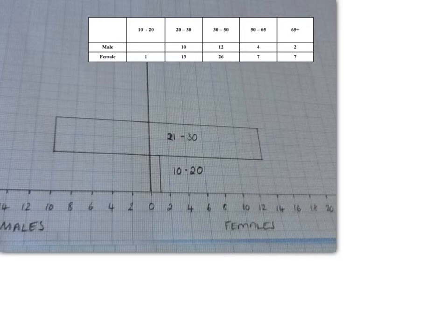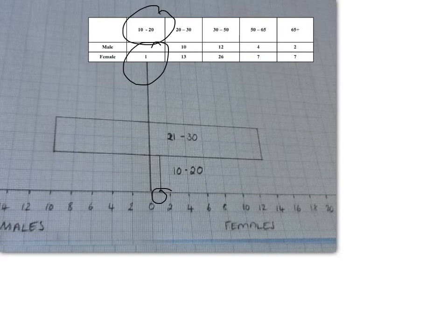You are now ready to begin to draw your bar graphs. They go horizontally, as you will see. For the 10 to 20 age group, there are no males, but we had one female. So we go down to our scale, and as one centimeter equals two people, then half a centimeter will equal one person. You draw yourself a nice, neat horizontal bar, as you can see.